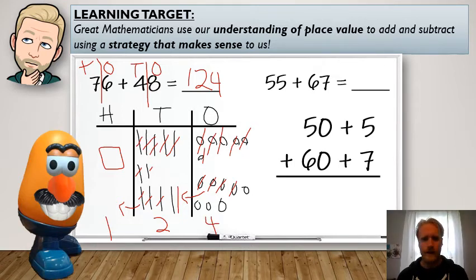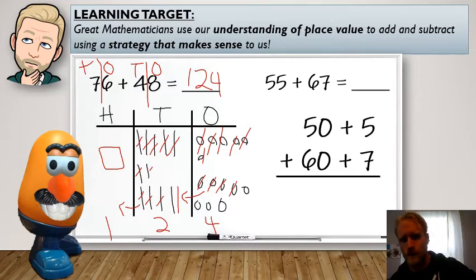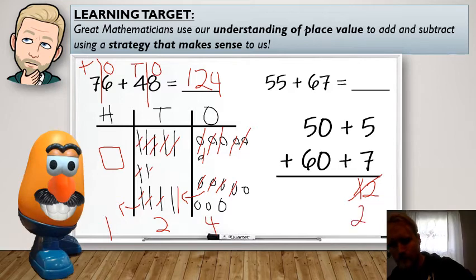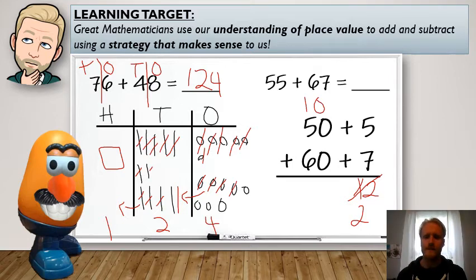Okay. All right. So let's go ahead and add them together. All right. So 5 plus 7. Well, I know 5 plus 5 is 10. So 5 plus 7, that's 12. Can we have 12 in the ones place? No, we can't. So I'm going to cross out 12. I'm going to leave 2. And I'm going to add the 10 up above into the tens place.